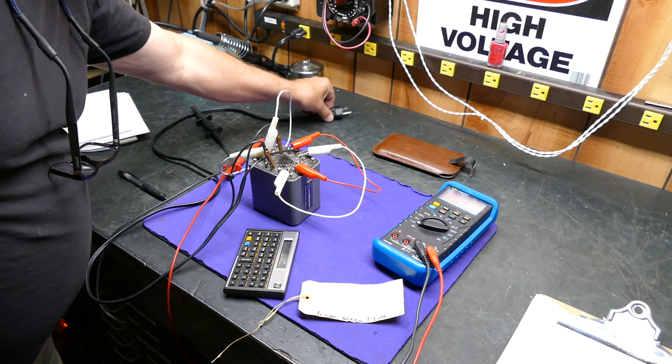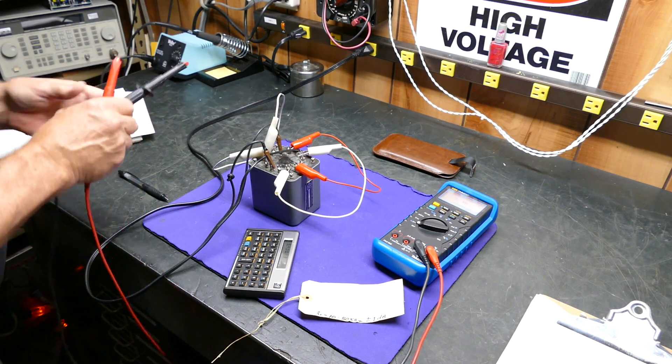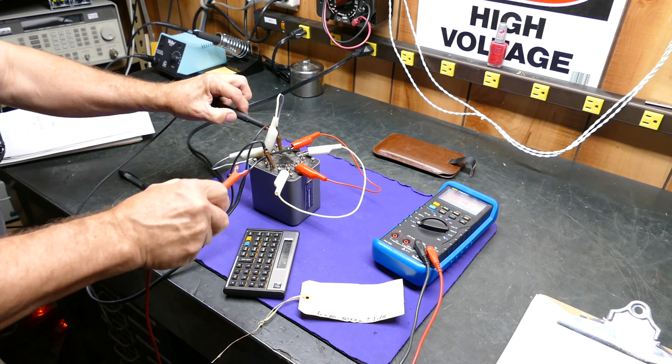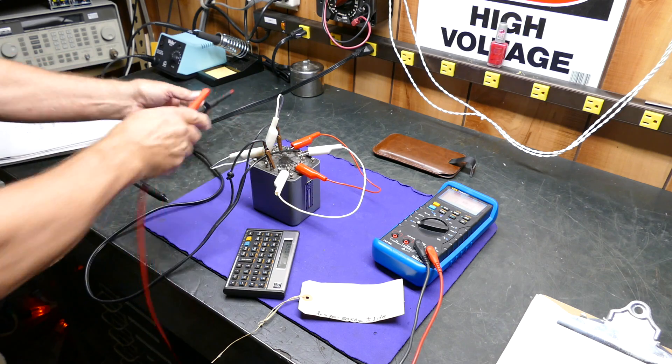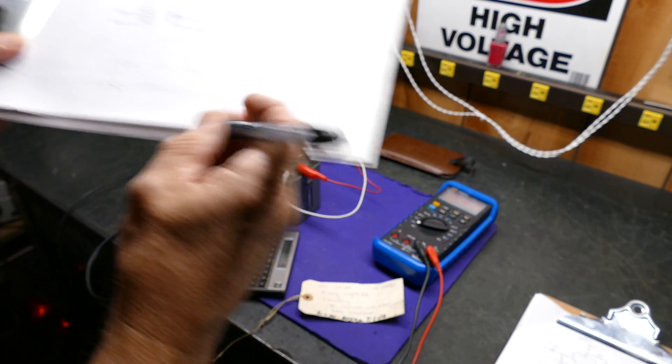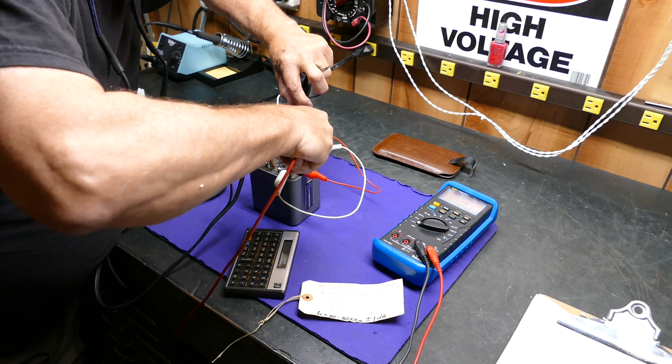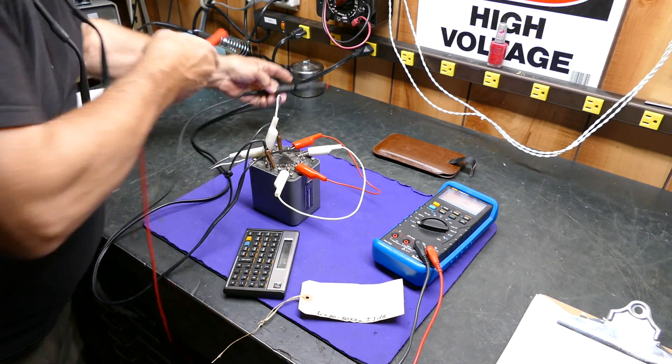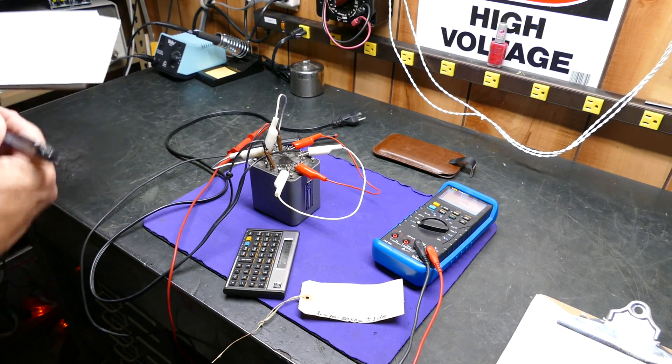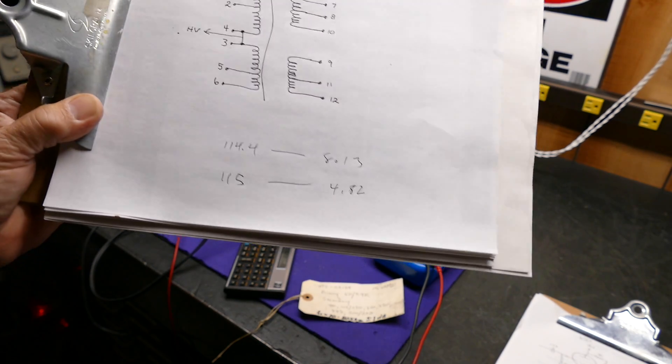Now, if we plug this guy in, we're going to make the measurements again. Because our 120 volts sometimes varies a little bit with load. It's 115.2. Let's write that down. And then look at these voltages right here. 4.82.